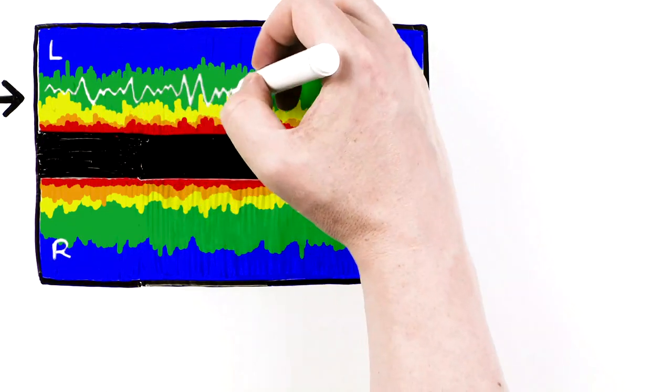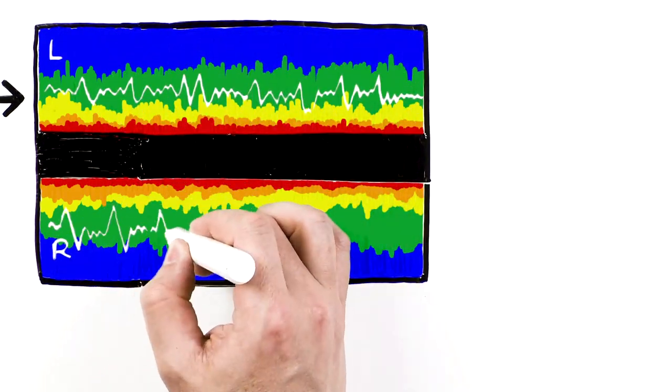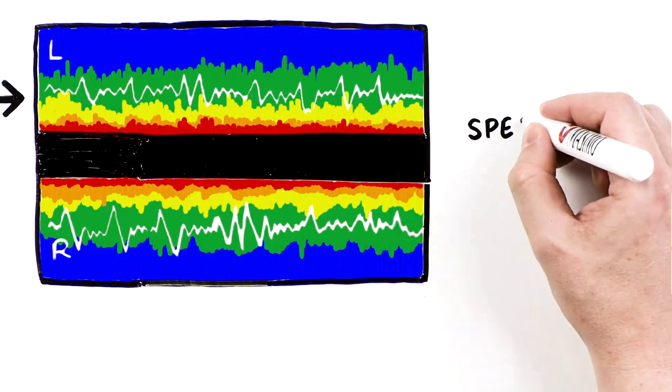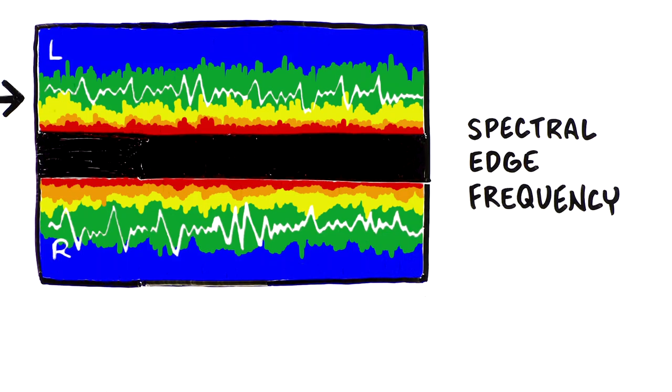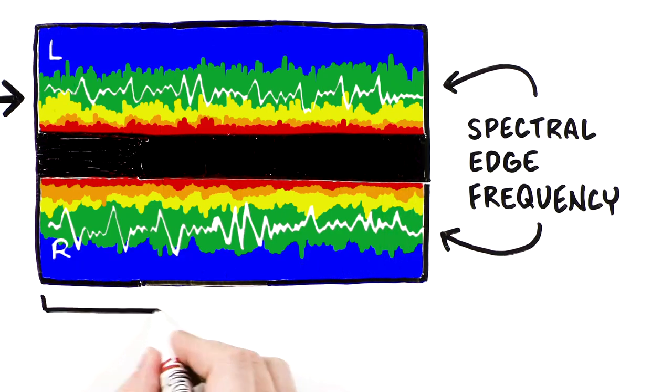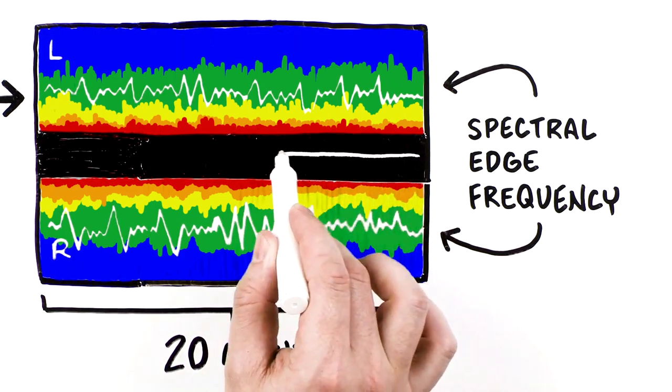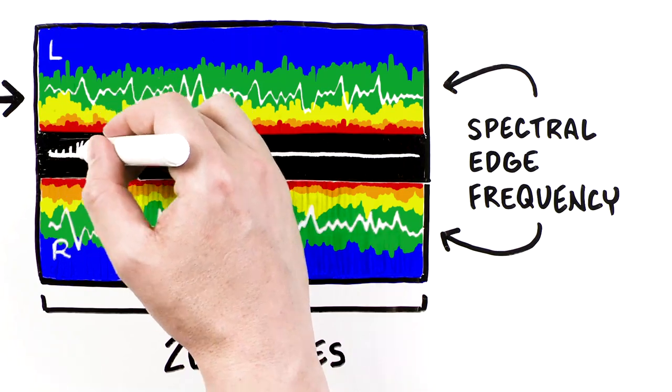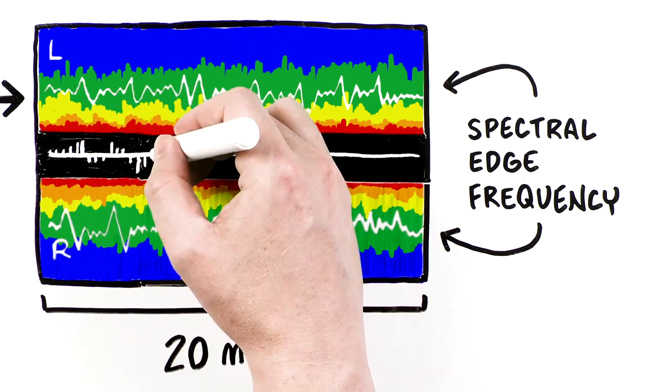By calculating where the power is in the EEG, SEDLINE can display the spectral edge frequency, the level at which 95% of the power exists, and plot it as a white line on the DSA. The resulting display provides a power and frequency analysis over a 20-minute period, a density spectral array.